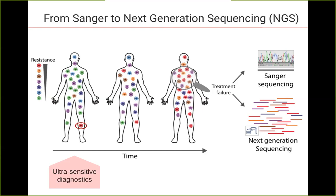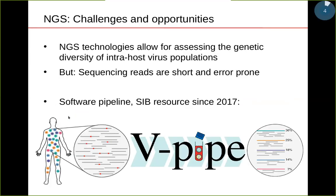Currently, the history of sequencing has been done with Sanger, which gives us an overview of the whole population — only the consensus. It would be clinically interesting to be able to go back in time and see already when there's only one variant emerging. This is the type of possibility now offered by new sequencing techniques such as next-generation sequencing on devices such as those from Illumina. However, these techniques come with some disadvantages: the reads are short and there are possible sequencing errors.